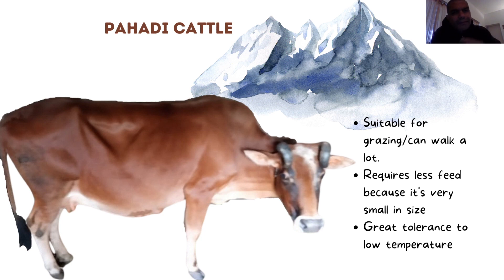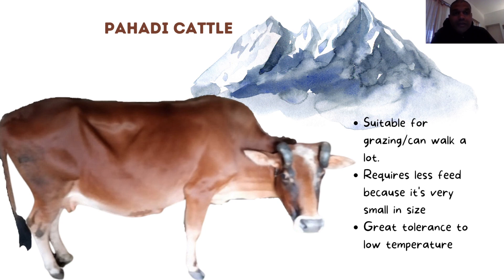At the peak of production, the Pahadi cow will produce four to six liters of milk a day. But this milk is very good for home consumption - it is very tasty, yellowish in color, creamy, and actually very sweet. So as milk to be drunk at home it is very tasty, but the production is very low.